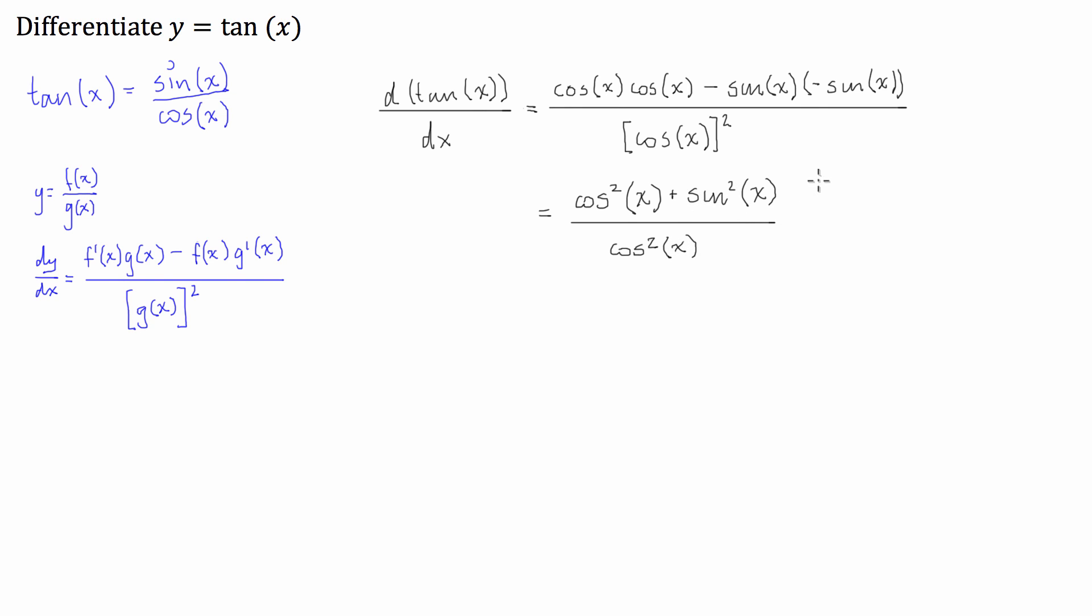Okay, now, what some of you might see is that the numerator on this function that we have now, this is just the Pythagorean identity. Okay, and the Pythagorean identity says that cos squared of x plus sine squared of x equals 1. So, that there's the Pythagorean identity.